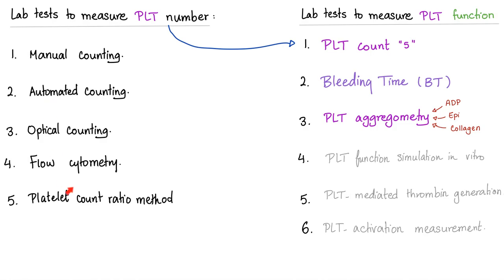How do you measure platelet number? Manual counting the old way, automated counting the modern way, optical counting, flow cytometry, and the platelet count ratio method. To measure platelet function, you need the platelet number first — so any of these five methods — plus bleeding time, which was the topic of the last video, and platelet aggregometry, which is the topic of today's video.